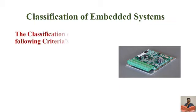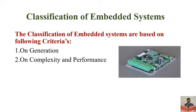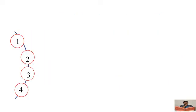The classification of embedded systems is based on four criteria. Number one is based on generation. Number two is based on the complexity and performance of embedded systems. Number three is about the deterministic behavior of a real-time system. And number four is based on the triggering given to an embedded system.